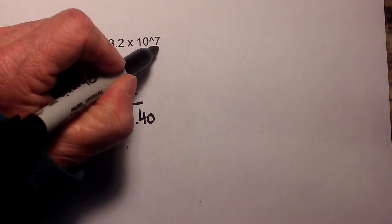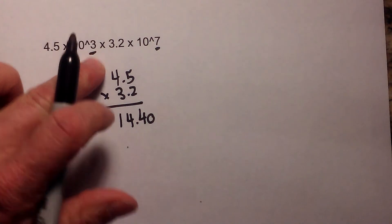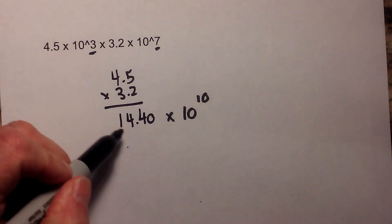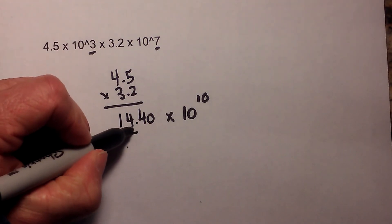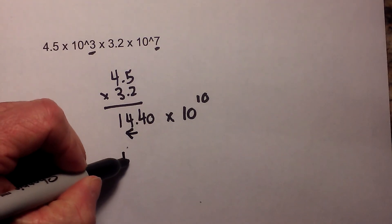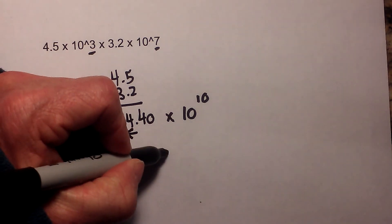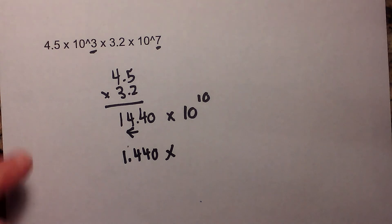I will add the exponents: 3 plus 7 is 10. But it is not in correct scientific notation. I will move the decimal 1 to the left, so that becomes 1.440. And on these, I'm not really worrying about significant figures, it's just multiplying in scientific notation.